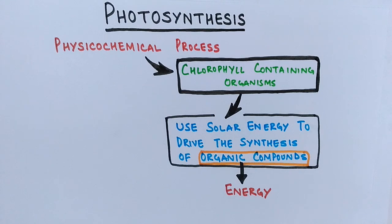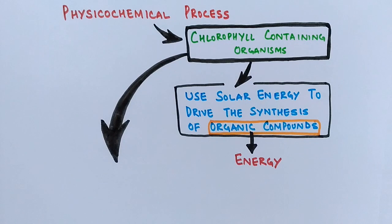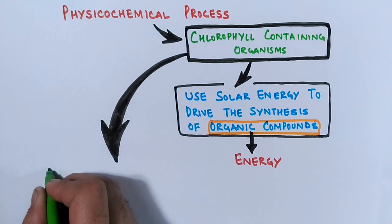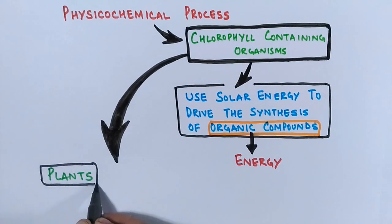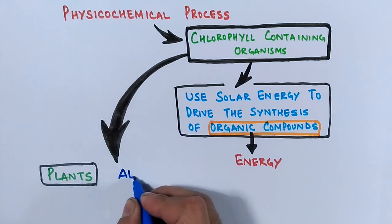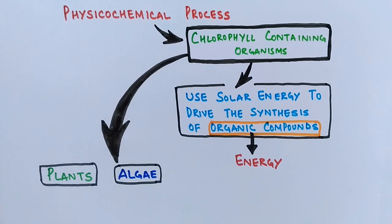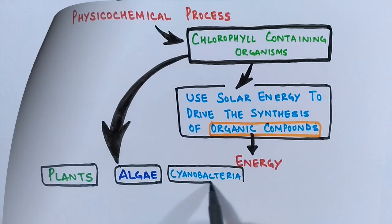Now, what are the chlorophyll-containing organisms? Green plants are the first to drive photosynthesis, then we have algae, and finally there are some prokaryotes — bacteria that can perform photosynthesis — called cyanobacteria.